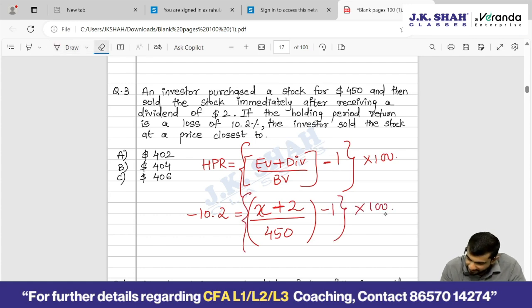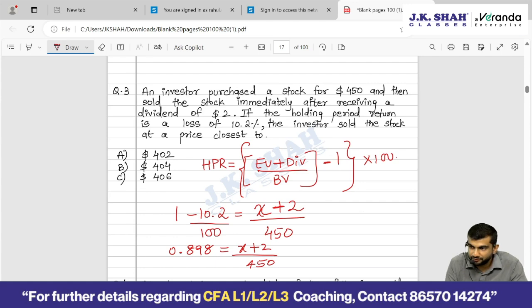This times 100 I will get it here and divide it by 100. I will divide this by 100 and this minus 1 I will get it over here and do it plus 1. So just solve for this much at least. How much is it? 0.898 left hand side. 0.898 equals x plus 2 upon 450. So 450 times 0.898 is 404.1. So how much is x? 402.1. So closest is option A. That 404 which you are getting is a total of ending value of the stock plus the dividend. They have just asked you the ending value of the stock. I hope it's clear now.